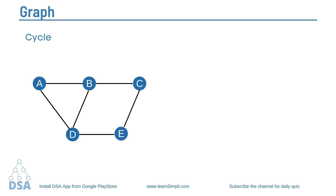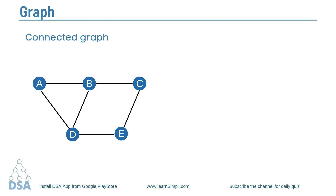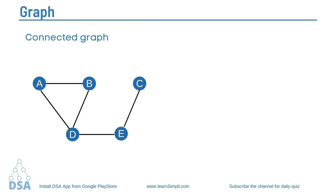Next, let's talk about the connectivity of a graph. A graph is said to be connected if there is a path from any node to any other node. We can say this is a connected graph because we can reach any node from any other node — there is a path between every pair of nodes. Suppose if we remove an edge, then it is no longer a connected graph because there is no path between B and C — it becomes disconnected.